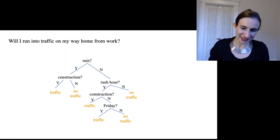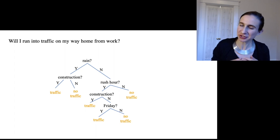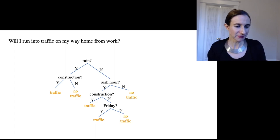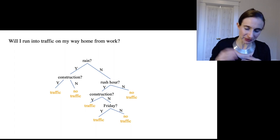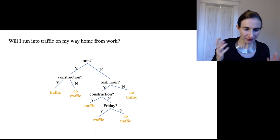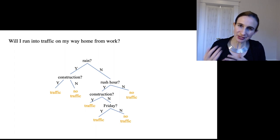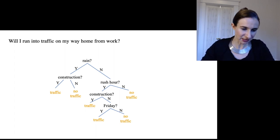The way the model operates is it asks if it's raining, and then if it's raining it says is there construction, and if there's construction it says yes you'll probably run into traffic. Otherwise if it's raining but no construction then it says okay you probably won't run into traffic. If it's not raining it asks if it's rush hour and so on and so forth. That's how it works—it's a logical model, it works on kind of if-then statements.